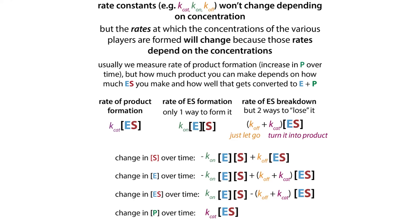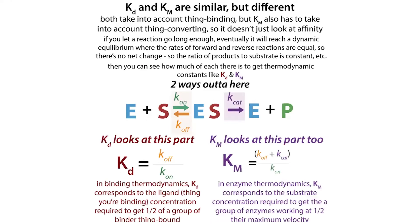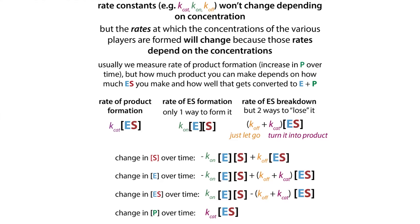The rate comes from those rate constants and the concentration — similarly to how when we talked about equilibrium binding thermodynamics and the Kd, we had rate constants K-on and K-off. But the actual rate of your binding depends on concentration, so you have to multiply by concentrations. Similarly, the velocity we see depends on those rate constants — and that's what we talk about with Kcat. Kcat is a rate constant, whereas velocity is a rate. Rate versus rate constant — it's really important to keep that distinction in mind.